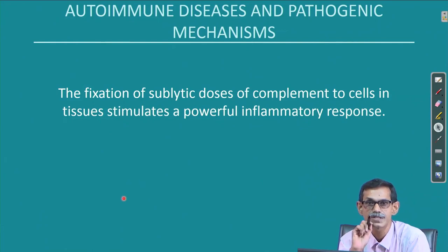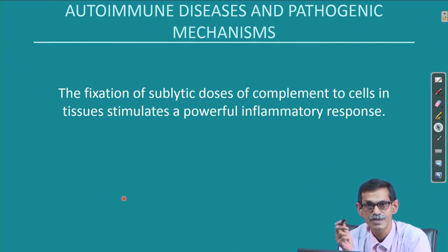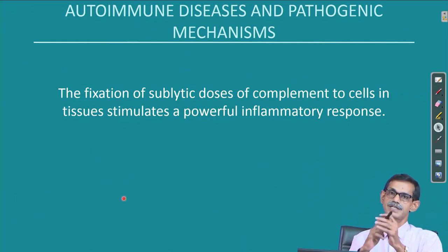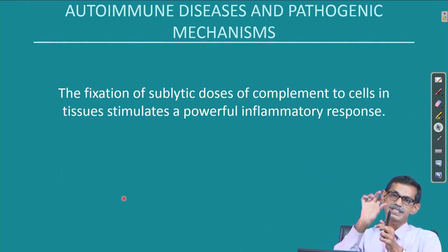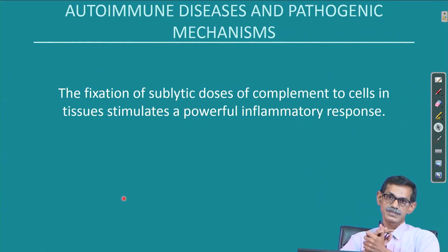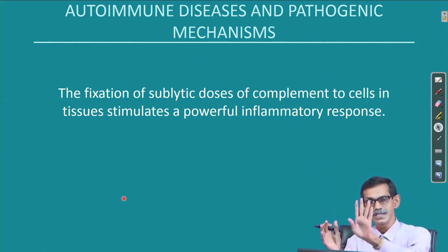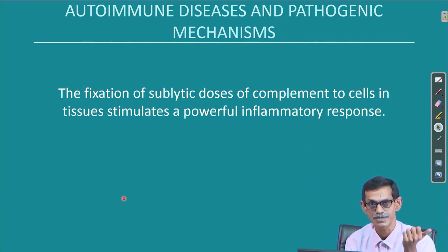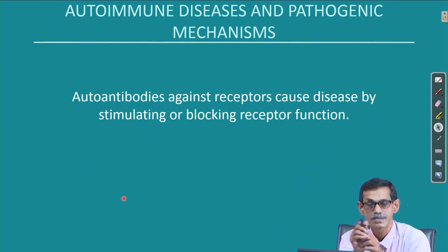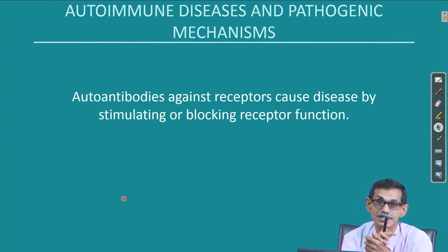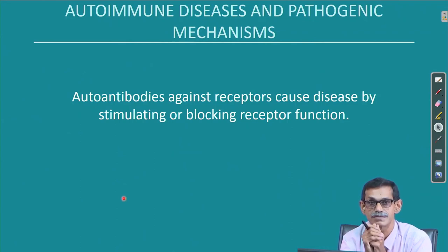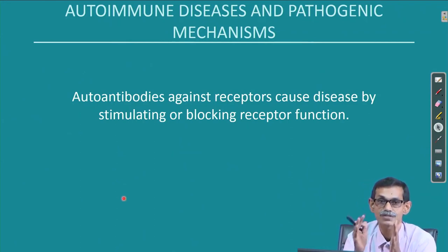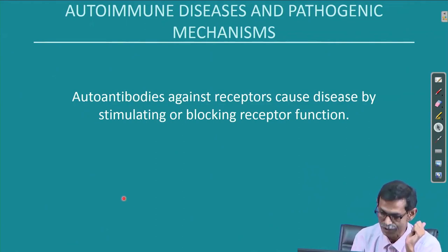Sublytic doses of complement deposited on cells also cause inflammatory responses—small complement fragments C3a, C4a, and C5a generate inflammation alongside the lytic pathway. Antibodies against receptors are another common mechanism of autoimmune disease: for example, Graves disease involves antibody against the TSH receptor, and myasthenia gravis involves antibody against the acetylcholine receptor.